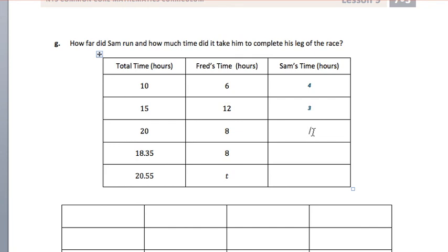In 20 hours, 20 minus 8 is 12. In 18.35, if Fred's time is 8, Sam's is 10.35. And finally, looking at our original expression, 20.55 minus whatever Fred's time was.